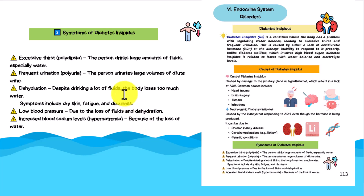Some of the symptoms of diabetes insipidus: excessive thirst — polydipsia — where the person drinks large amounts of fluids, especially water. Frequent urination — polyuria — where the patient urinates large amounts of dilute urine. Dehydration: despite drinking a lot of fluids, the body loses too much water, so symptoms include dry skin, fatigue, and dizziness. We'll also see low blood pressure — hypotension — due to loss of fluids and dehydration. We'll also see increased blood sodium levels — hypernatremia — because of the loss of water.